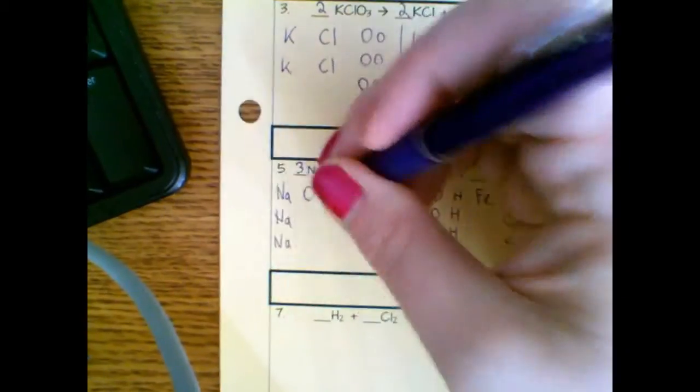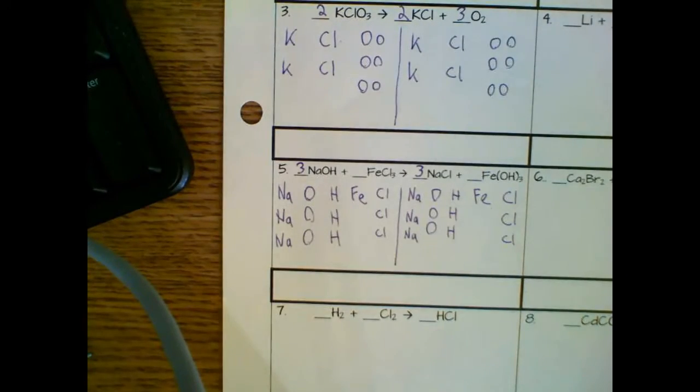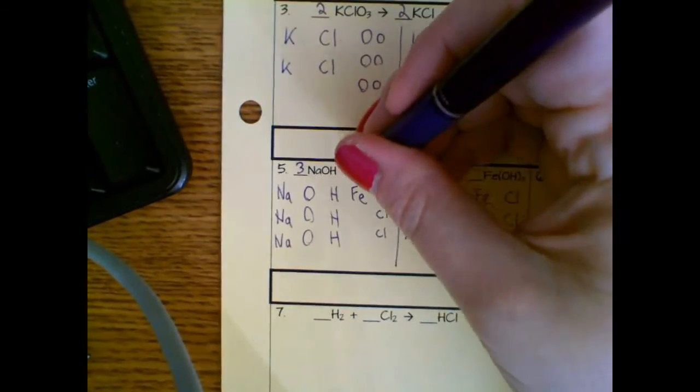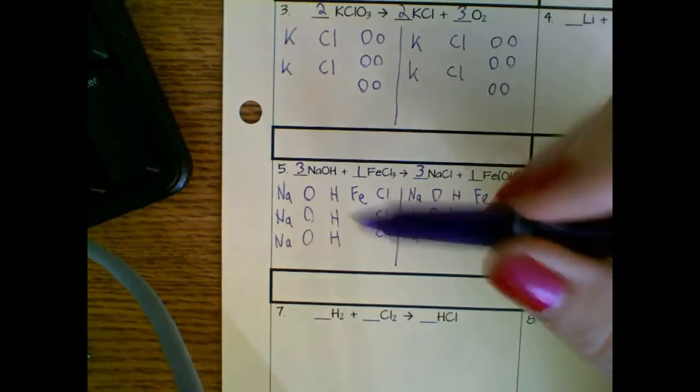That gives me three NA's, three O's, three H's. And I'm actually already balanced just with that. These two that I've left blank, you could write in a one if you really want to, but we usually don't put a one in. It's just assumed that there's only one there.